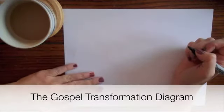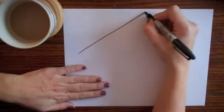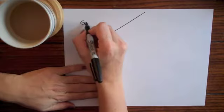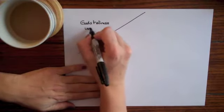This is called the Gospel Transformation Diagram. So when we first surrendered our life to Christ, it was because God's holiness, His perfection, was unveiled to us.